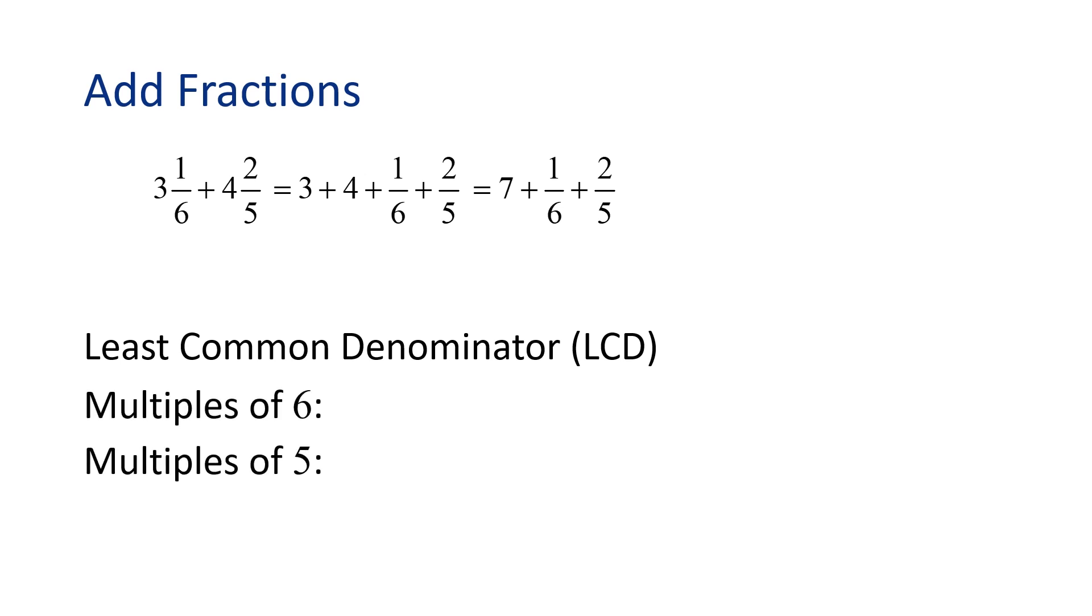Multiples of 6 are 6, 12, 18, 24, 30, and so on. Where multiples of 5 are 5, 10, 15, 20, 25, 30, and so on. It looks like 30 is the least common multiple of 6 and 5, so that will be our LCD.